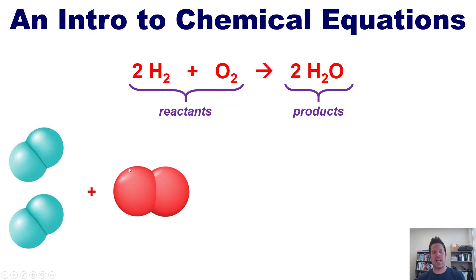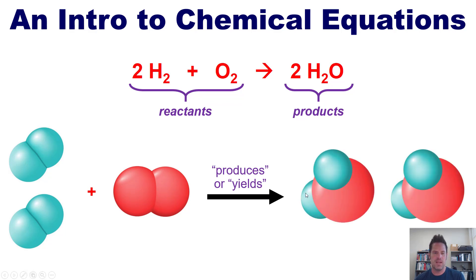So these larger numbers that are to the left of each of the molecules in the chemical equation are called coefficients. The coefficients tell you how many molecules there are of each type. These lower or smaller numbers are called subscripts. They tell you how many atoms of each element are within each individual molecule.